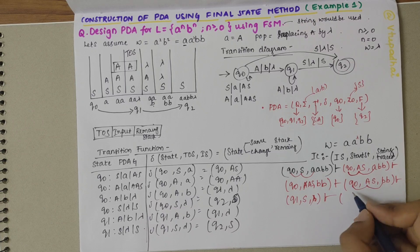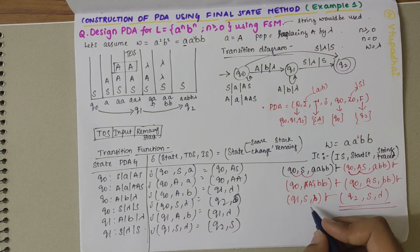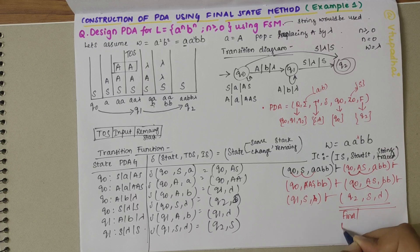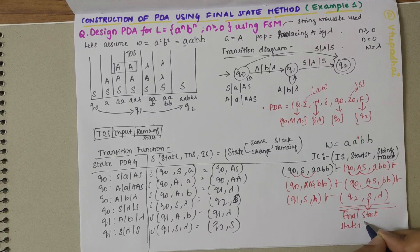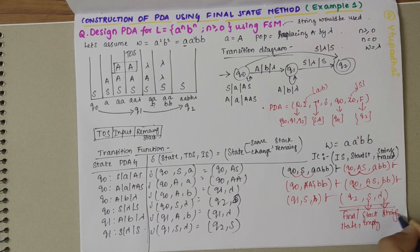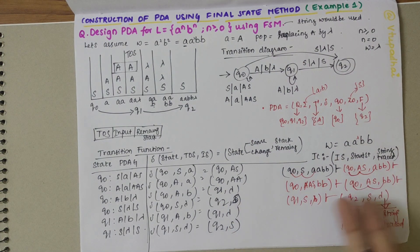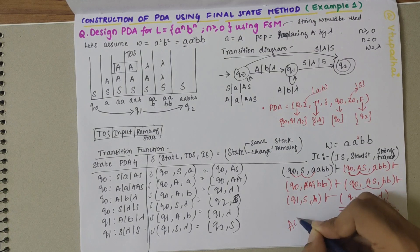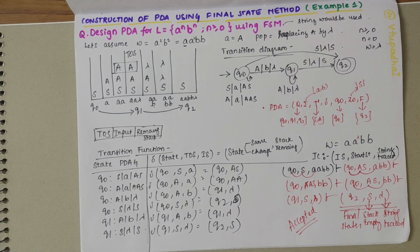When we arrive at (q2, S, λ): we have reached the final state q2, S represents that the stack is empty, and lambda tells that the string has been fully traced. In the final state method, if the instantaneous description result has the final state with an empty stack and empty input, it confirms the PDA is correct for the language and the string aabb is accepted. If you have any doubts, let me know in the comments and subscribe to my channel.